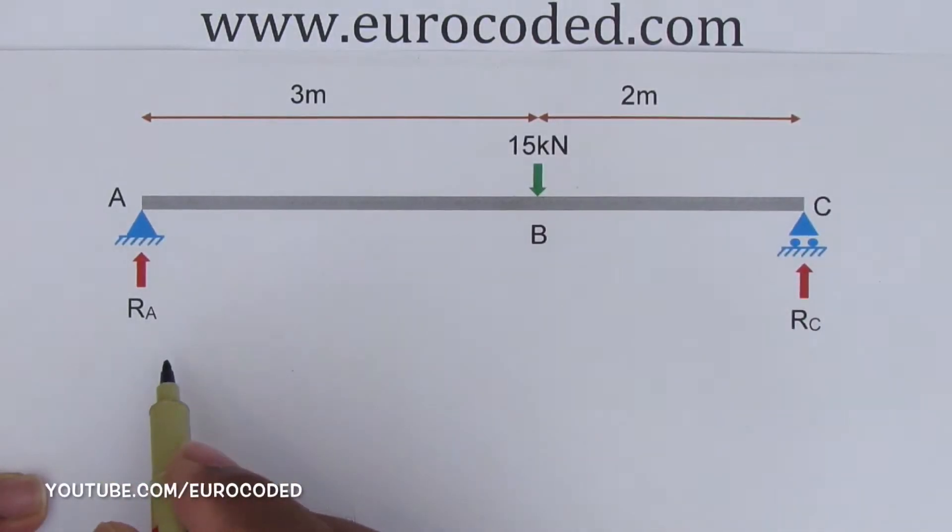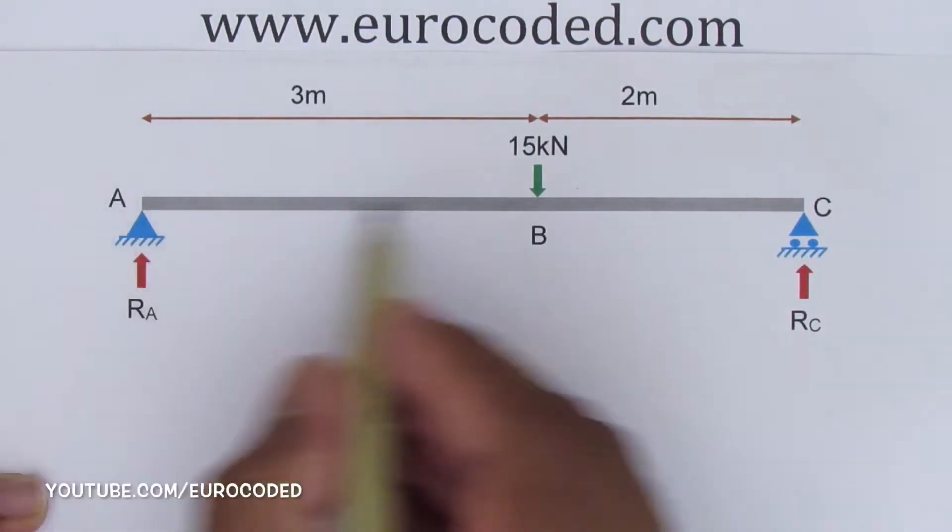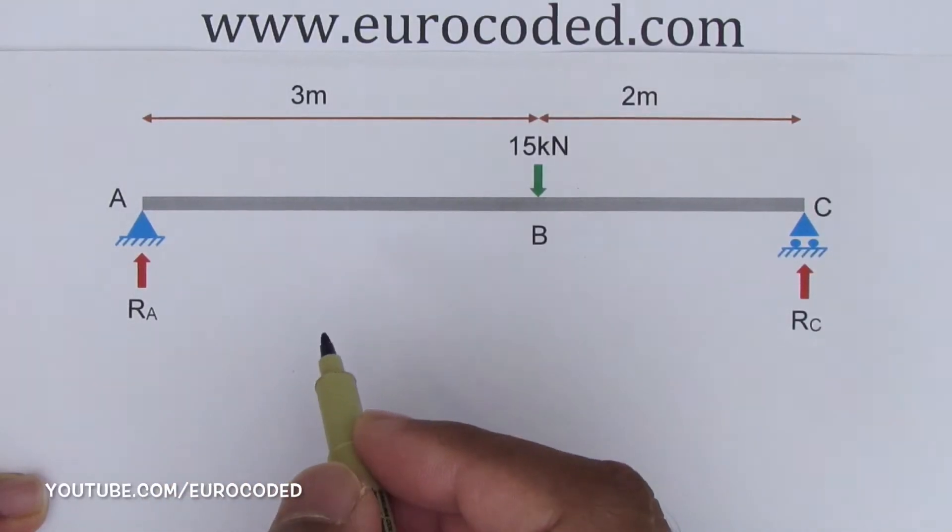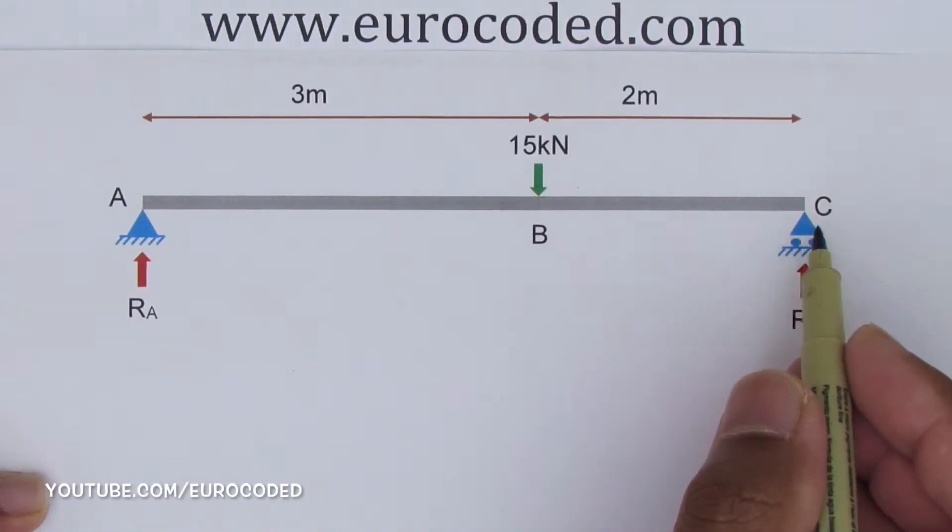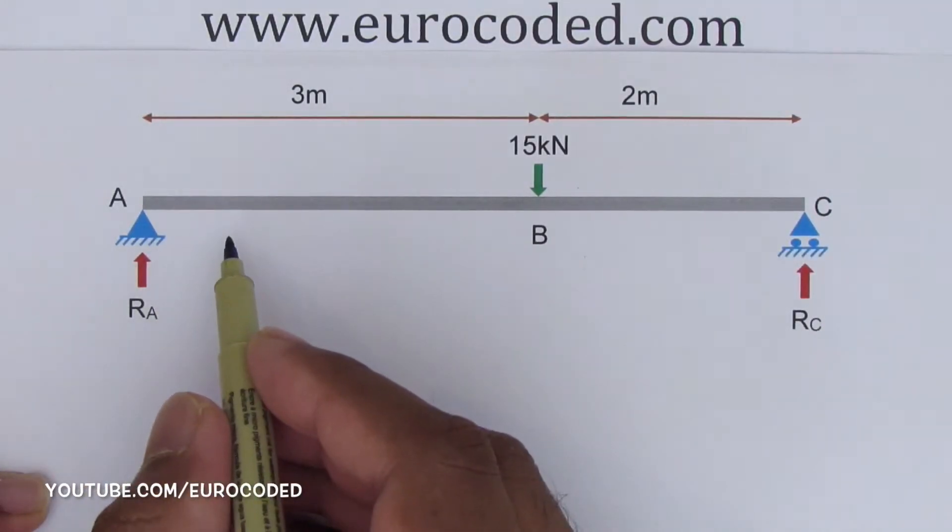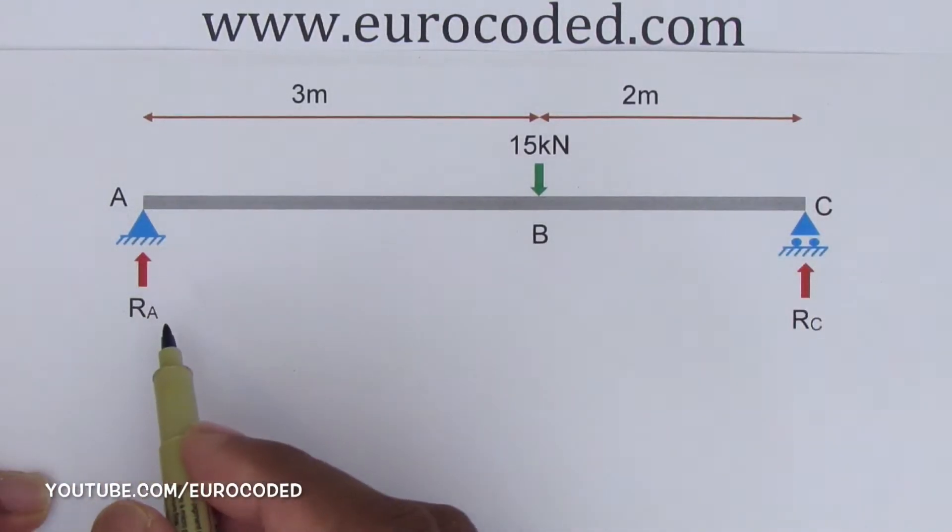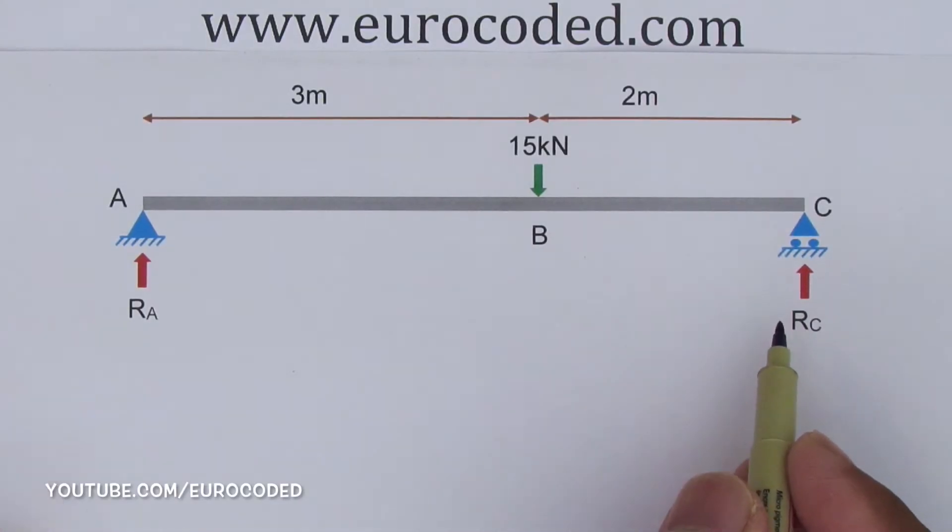In this video, we are going to form an imaginary cut somewhere along this beam and then draw a free body diagram. Then this free body diagram will enable us to calculate the bending moments and shear forces in this beam at particular points. After that, we can use those values to draw bending moment diagram and shear force diagram.